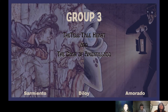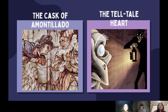Good day, everyone. We are group number three, and we are going to present our Venn diagram by comparing and contrasting the elements of two short stories assigned to us. Those are, first, The Cask of Amontillado, and second, The Telltale Heart. Let's begin with the brief background of the two short stories, to be discussed by Ms. Grisheel Sarmiento.